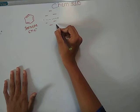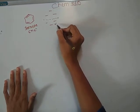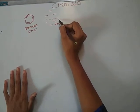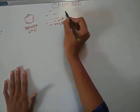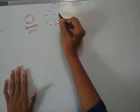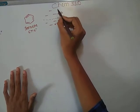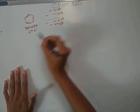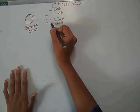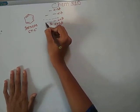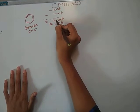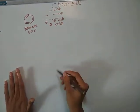The energies of these orbitals are: the first one has α + 2β, the second has α + β, then α − β, and finally α − 2β. The filling of the six electrons proceeds: one, two, three, four, five, six.